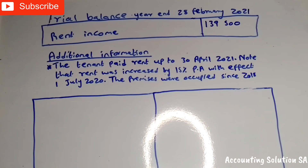Okay, without wasting time, let's go to our information. Number one: they give us a trial balance for the year ended 28 February 2021. They give us a rent income and the amount is R139,500. Then in the additional information they say the tenant paid rent up to date April 2021.